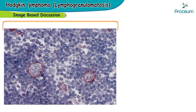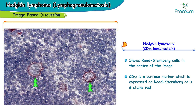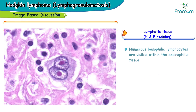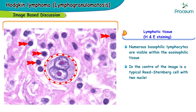Here's another histological image of Hodgkin's lymphoma stained with CD3 immunostain. In this image we can see a Reed-Sternberg cell at the center. CD30 is a surface marker expressed on Reed-Sternberg cells and stains red. Numerous basophilic lymphocytes are visible within the eosinophilic tissue, and at the center is a typical Reed-Sternberg cell with two nuclei.